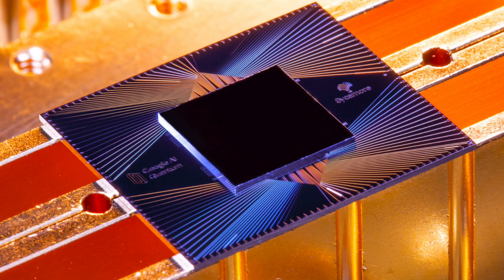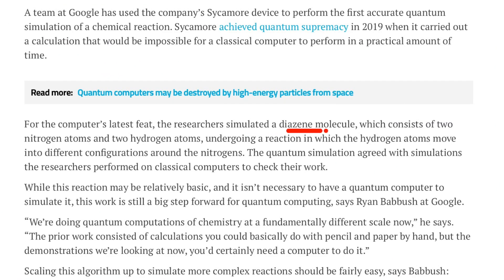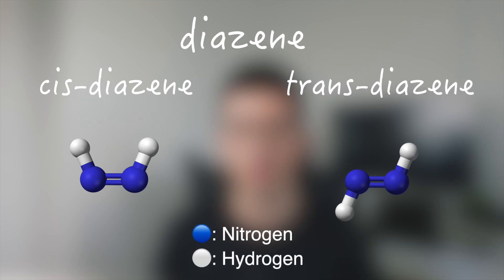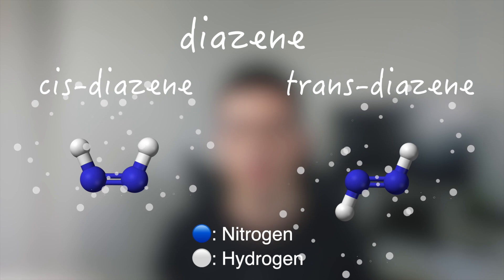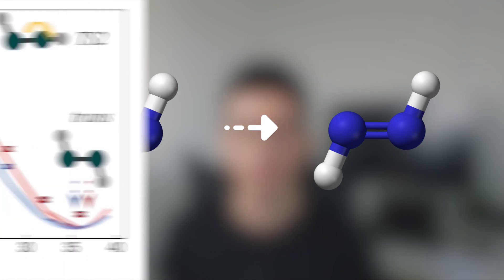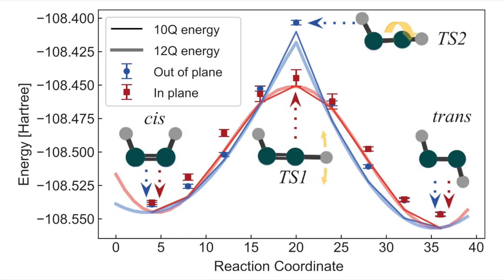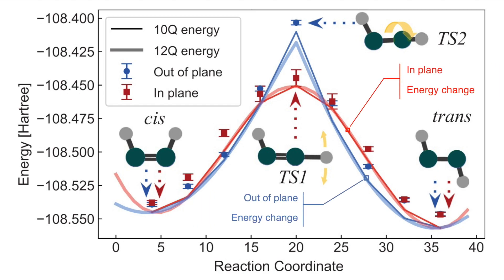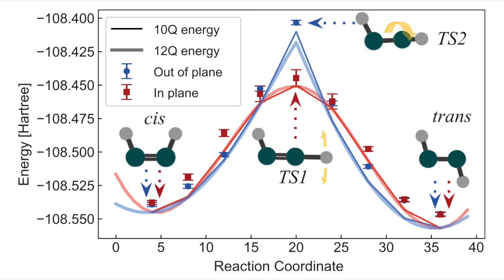Google simulated a chemical reaction on their quantum computer. Diazine has two isomers: cis-diazine and trans-diazine. The only difference between these two isomers is the orientation of the hydrogen atom. They simulated the process of converting cis-diazine to trans-diazine. There are two ways to do this: rotate the hydrogen atom in-plane, or rotate it out-of-plane. The energy changes differently depending on which way you rotate. This whole process, including the energy profile, was calculated by the quantum computer.